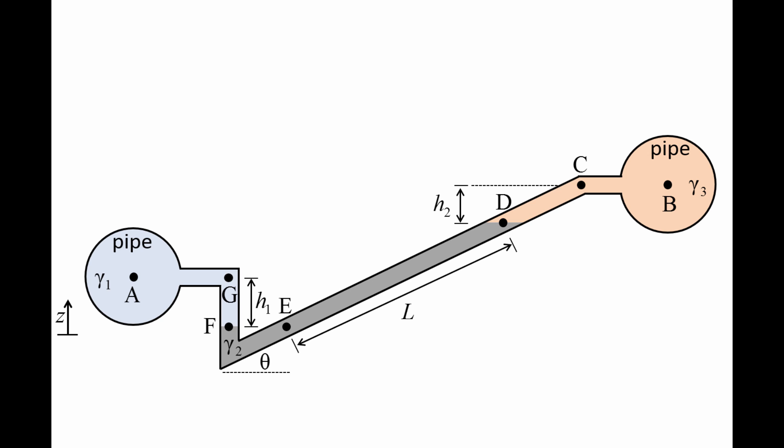Now we will determine the pressure difference between points A and B using hydrostatic principles. We start at point B and we'll work our way around the manometer until we reach point A. The pressure at point B is Pb, and the pressure is unchanged as we move horizontally to point C.